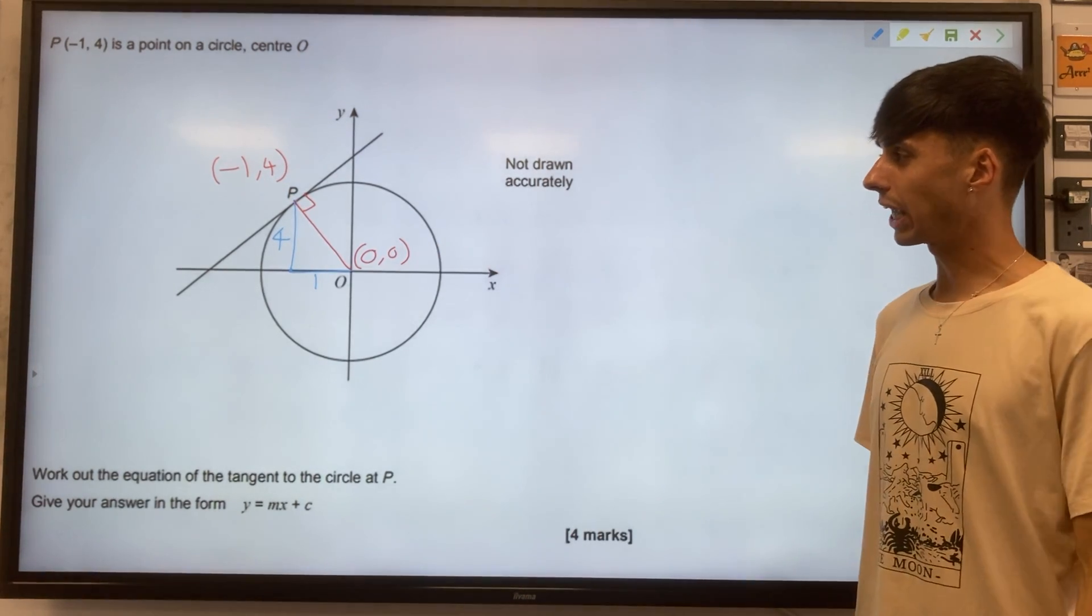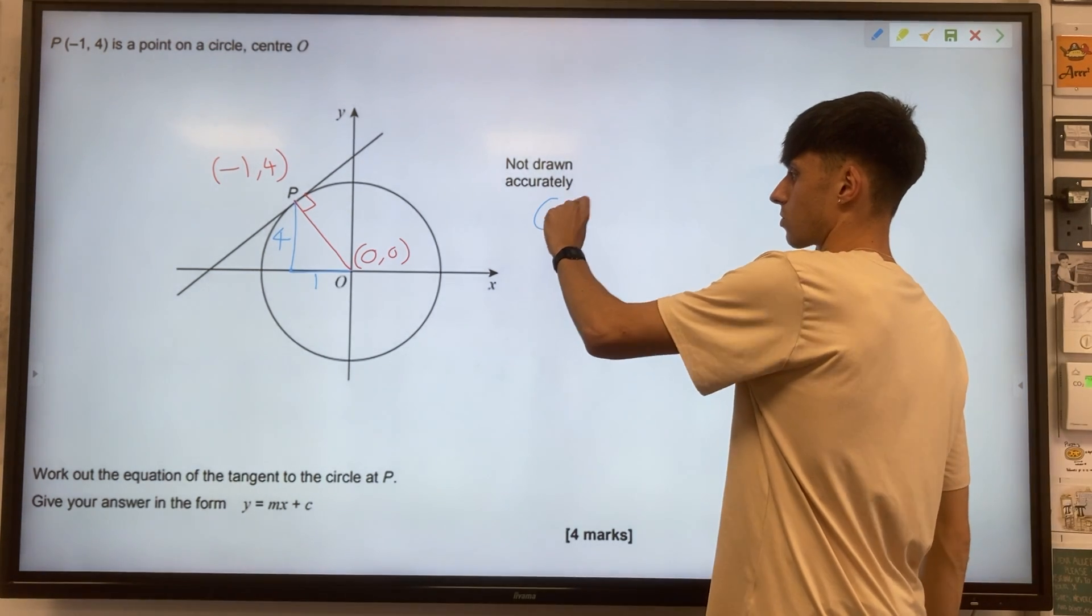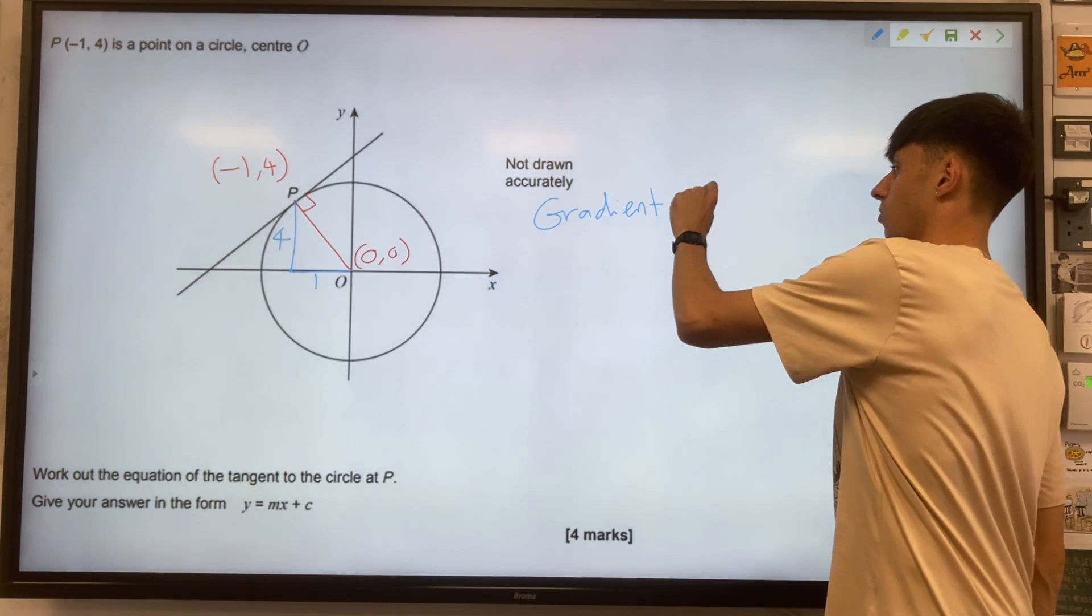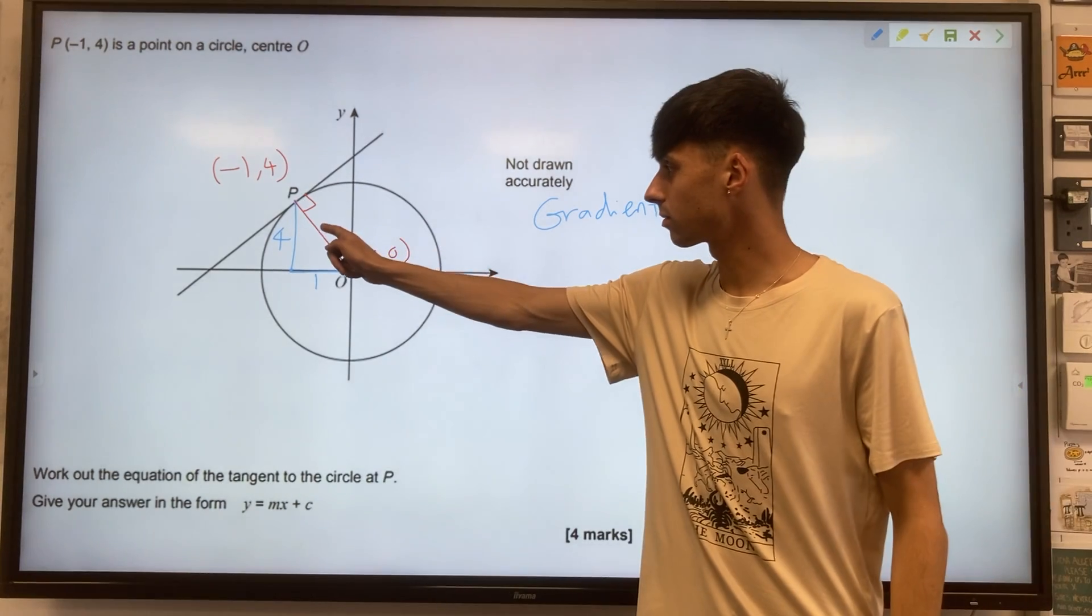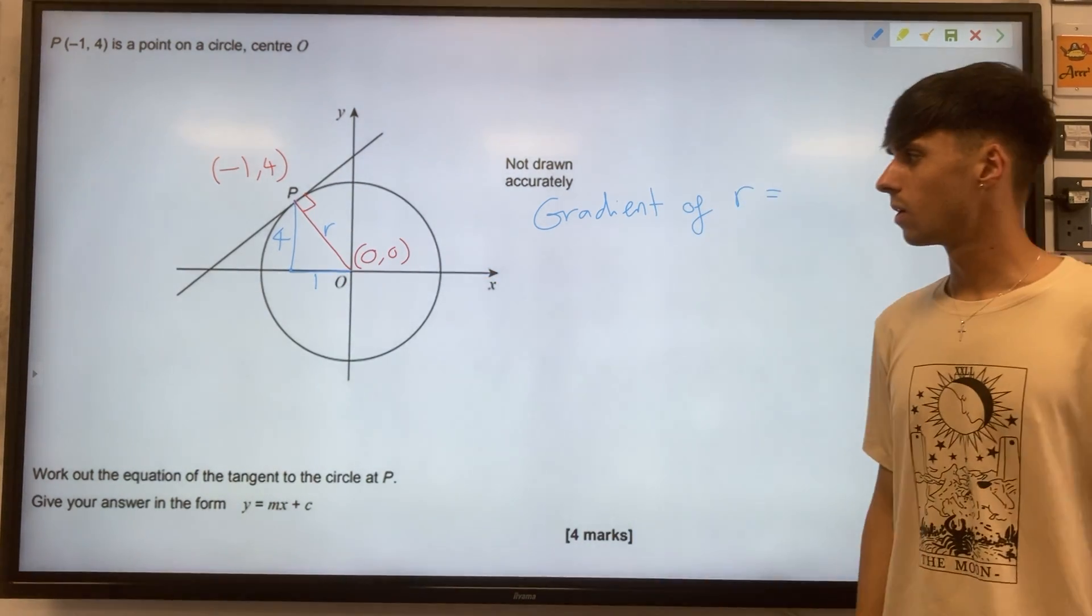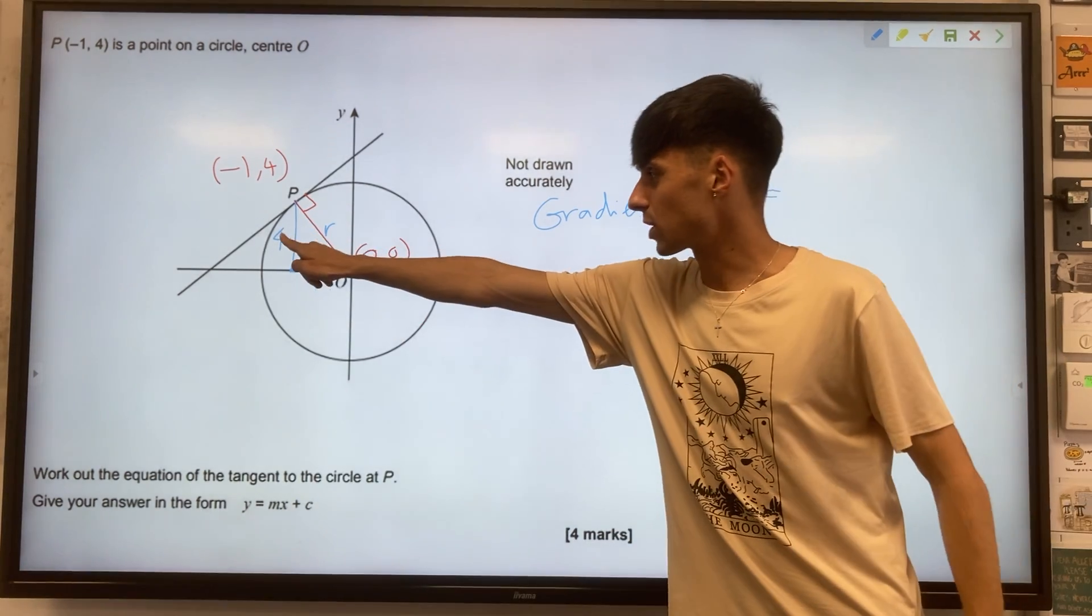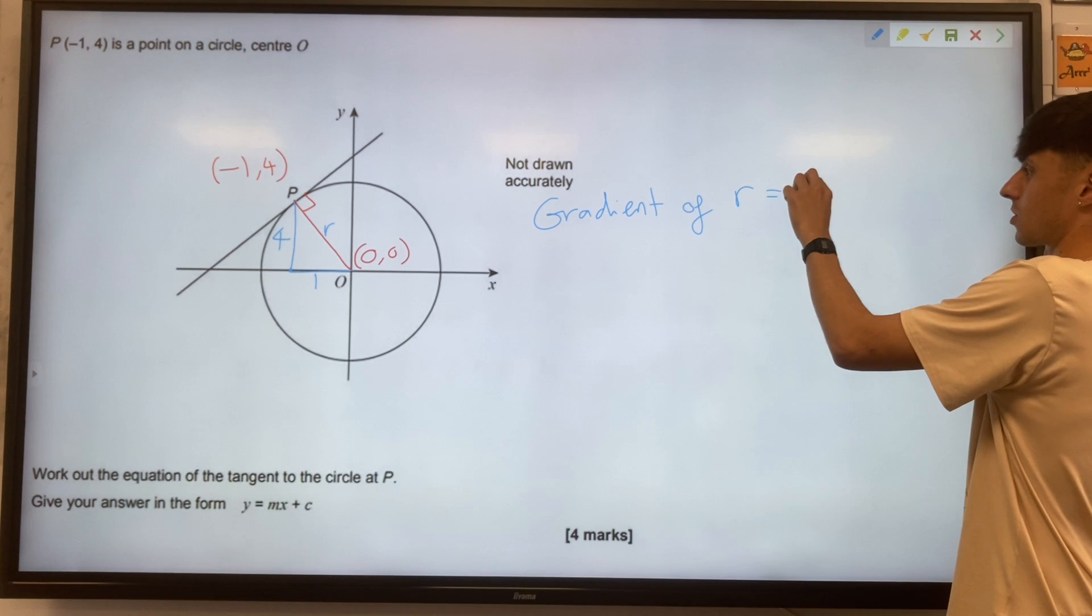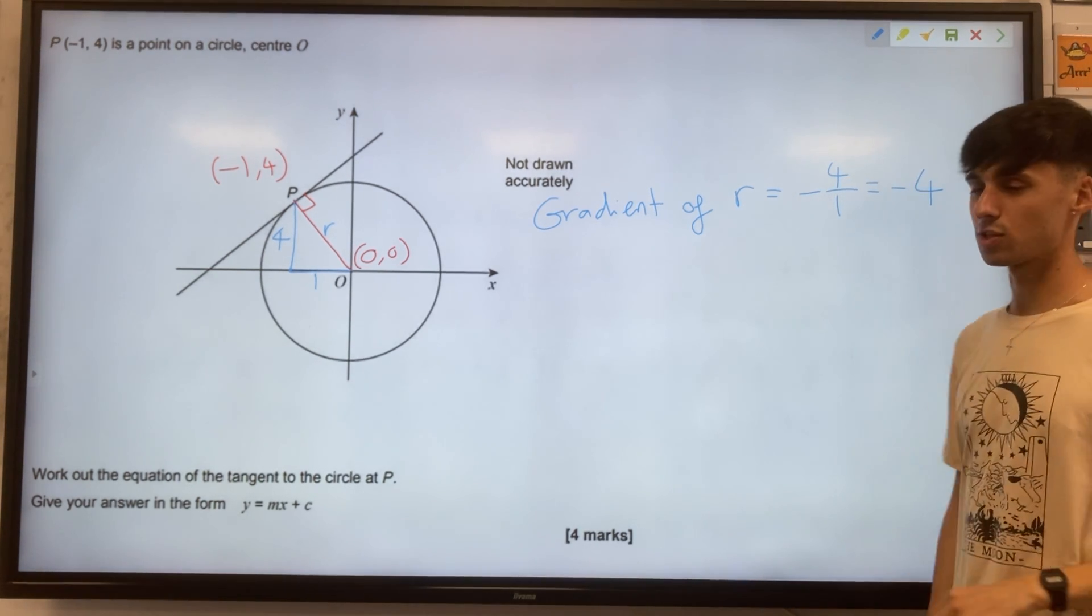Our next step should be thinking about the gradient of this line. So let's just write down here, we've got a gradient of r, or our radius that we're using here. And it's change in y over change in x. So this one is just going to be 4 divided by 1, but it's a negative gradient, isn't it? So minus 4 over 1 would just be minus 4.